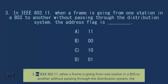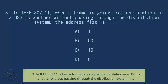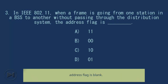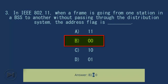Question 3: In IEEE 802.11, when a frame is going from one station in a BSS to another without passing through the distribution system, the address flag is blank. A. 11, B. 00, C. 10, D. 01. Answer: B. 00.